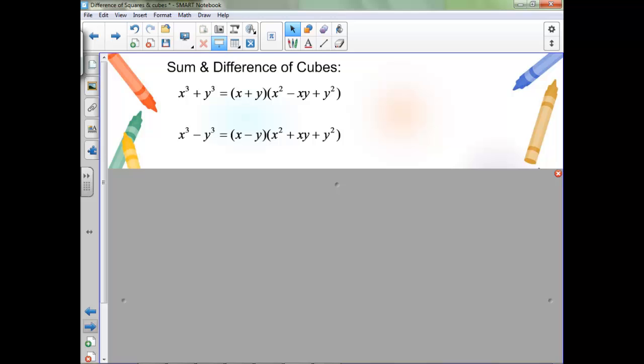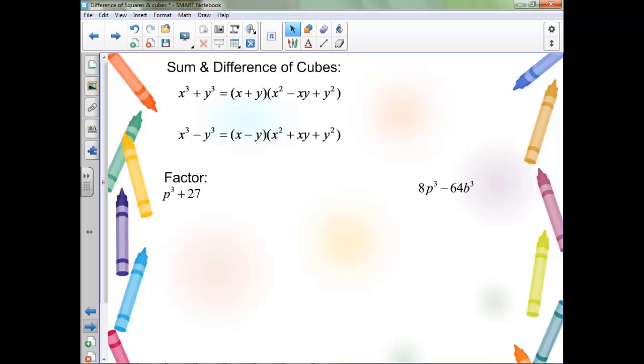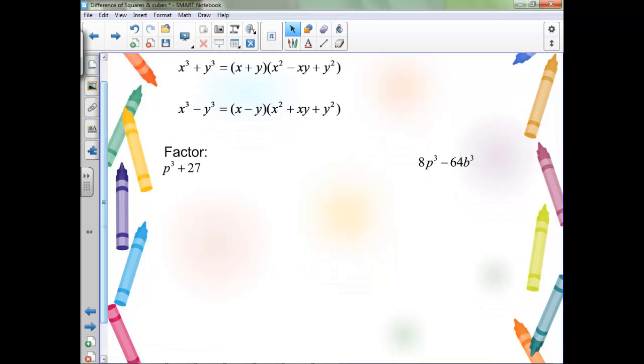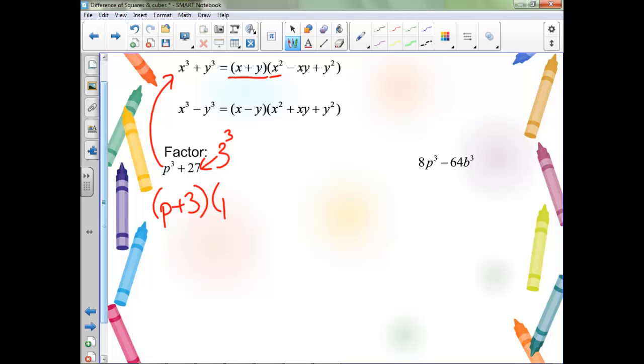It also works if you have a sum and difference of cubes, so numbers that are getting cubed. Notice this 27 is actually 3 cubed, so we're going to be using this first pattern. We'll have the things that are getting cubed, so p plus 3, and then the first thing squared, so p squared, minus each of these first two terms times each other, so 3 times p, and then we'll have plus this third term squared, so 3 squared, which is 9.